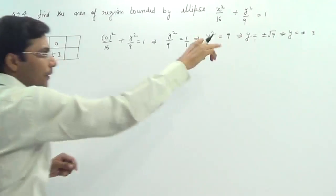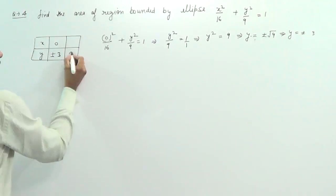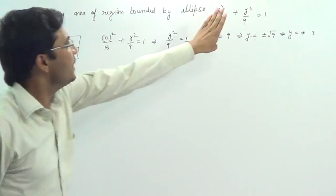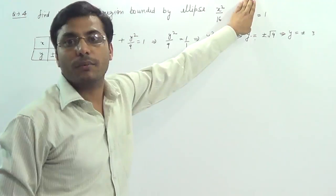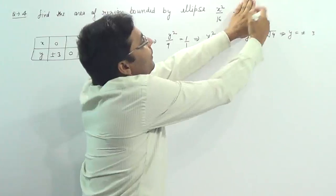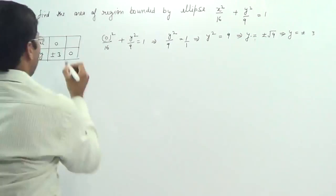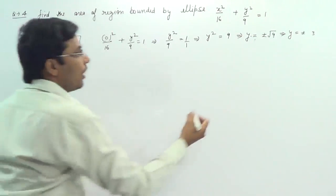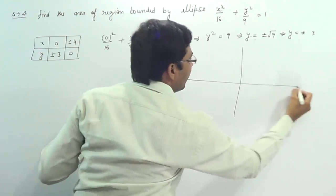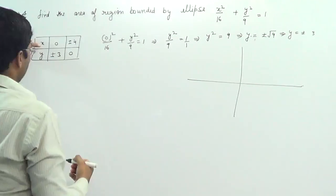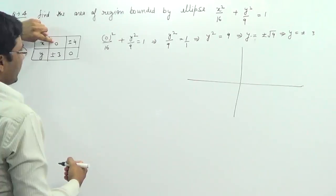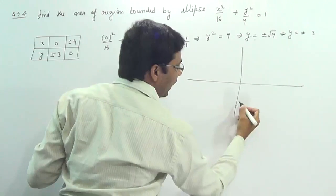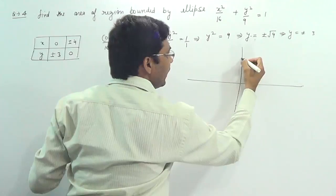When we plug y equal to 0, this whole value becomes 0, so x² equals 16 and x equals plus or minus 4. Now we draw the graph. One point is when x is 0, y is plus or minus 3; when y is 0, x is plus or minus 4.